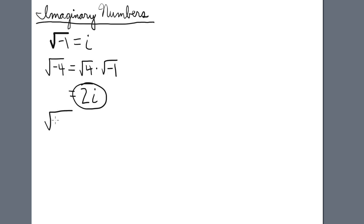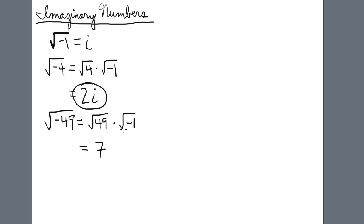One more example: if we have the square root of negative 49, let's break it down the same way — as the square root of 49 times the square root of negative 1. We can easily solve: the square root of 49 is 7, and the square root of negative 1 is i. So the square root of negative 49 is 7i.